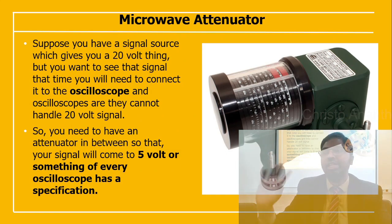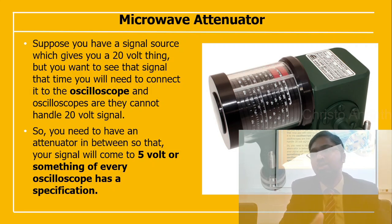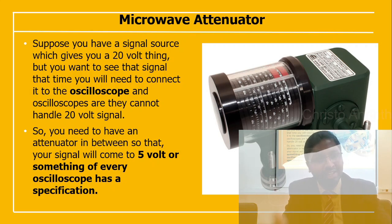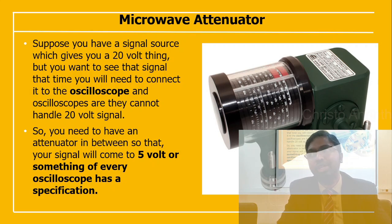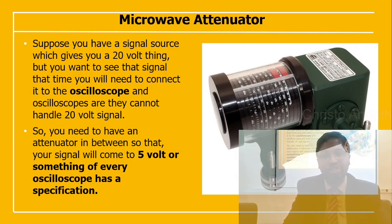For example, suppose you have a signal source producing 20 volts and you need to connect it to a cathode ray oscilloscope. The oscilloscope cannot handle a 20-volt signal, so you need an attenuator between them to reduce the signal to maybe 5 volts — within the oscilloscope's specification.